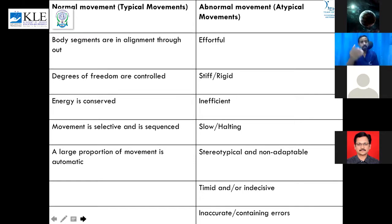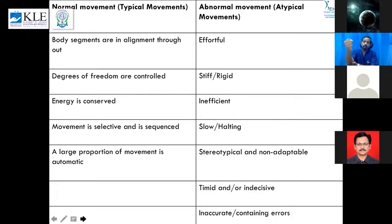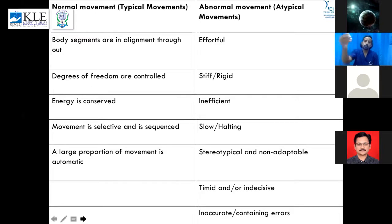Energy is conserved in normal movement, which is selective, sequenced, and largely automatic — you don't think about extending your elbow or flexing your shoulder. In abnormal movement, it is effortful because you start with the proximal component, which is stiff, rigid, and inefficient. You may not reach the target, and movement is slow, halting, and non-adaptable.